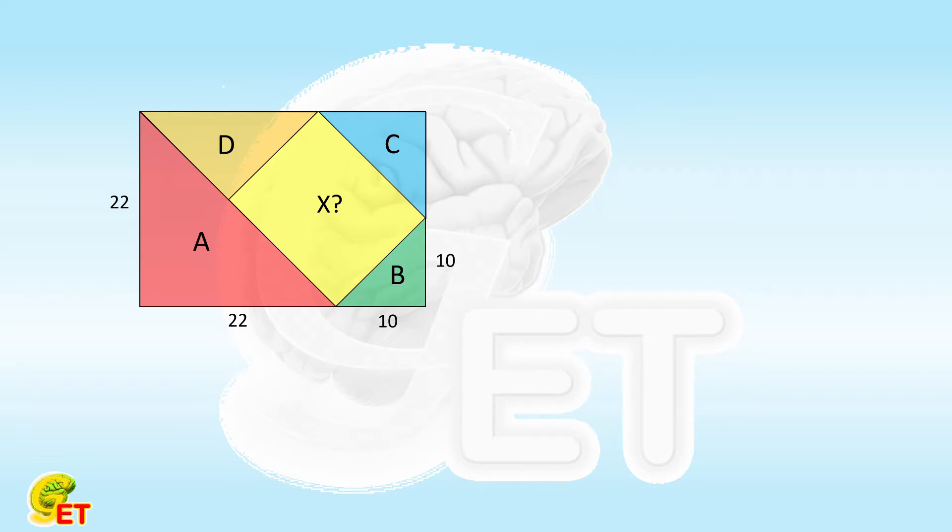The area of the triangle A equals 22 times 22 over 2, equals 242. Area B equals 10 times 10 over 2, equals 50.